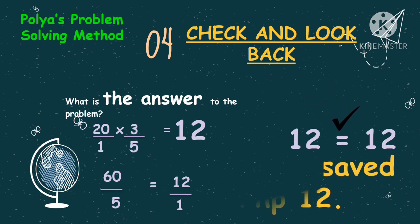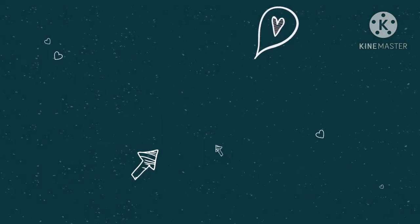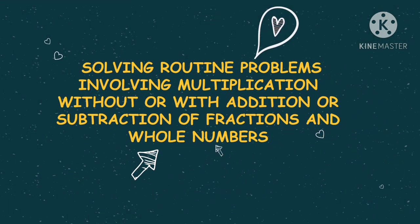Therefore, our final answer is: Cass saved 12 pesos. So, let's try to solve routine problems involving multiplication without or with addition or subtraction of fractions and whole numbers.